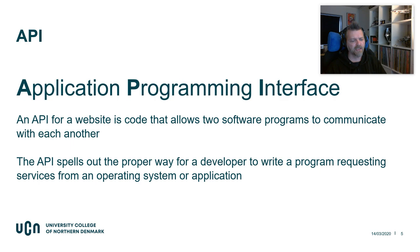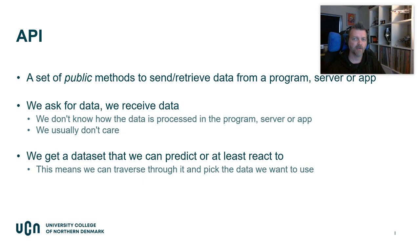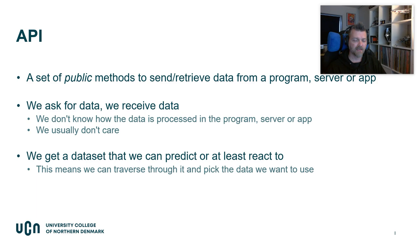An API usually has documentation that spells out how to use it properly for developers. So we get a defined set of rules for how to request information. An API is a set of public methods to send and retrieve data from a program, server, or app. We ask for data and receive data in the browser. We don't know how the data is processed, and we actually don't care — we just want the data we're asking for. We get a predictable dataset and know which key-value pairs are present, which means we can traverse that dataset and pick the data we want.